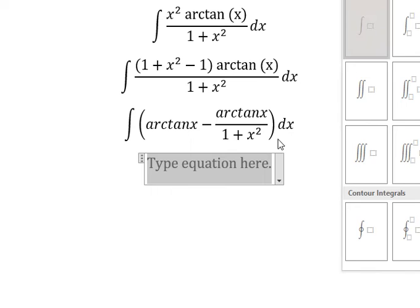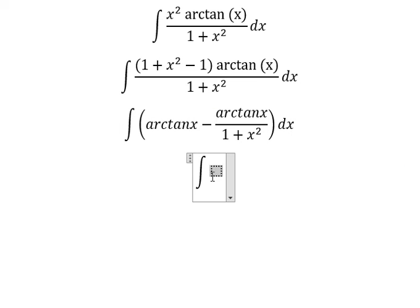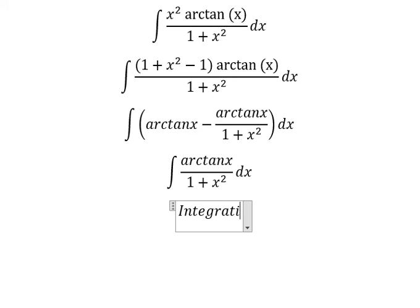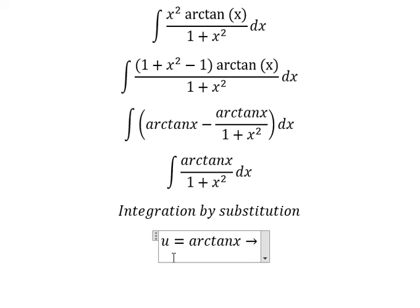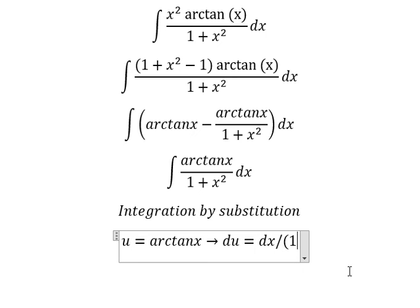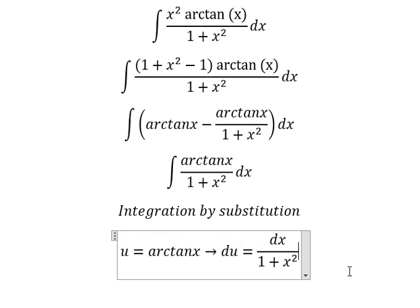So we have the integration, and we need to use integration by substitution. I will put u equals arctan(x). Then we take the first derivative of both sides, and we have du equals dx over one plus x squared after taking the first derivative.